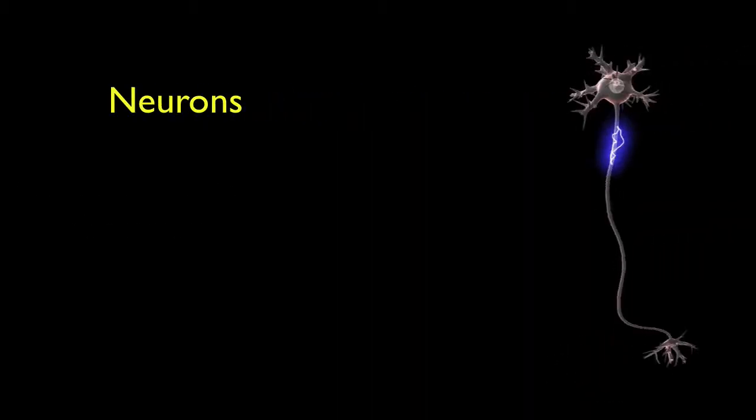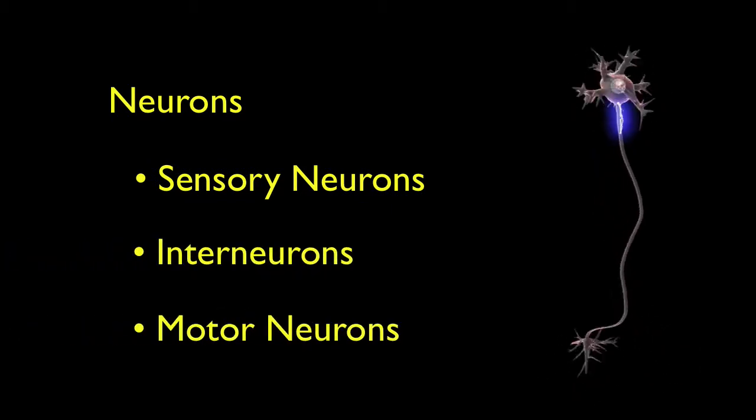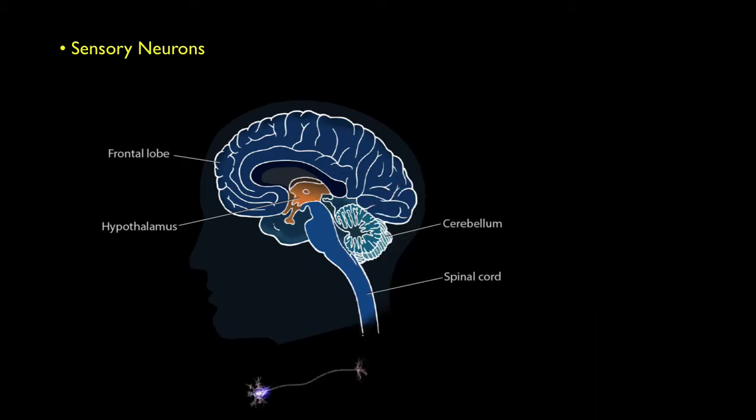There are three kinds of neurons: sensory neurons, interneurons, and motor neurons. Sensory neurons carry signals from the senses to your central nervous system, that is your spinal cord and brain.